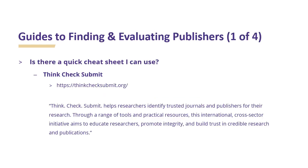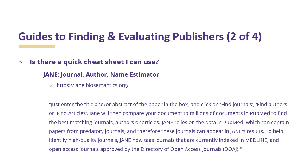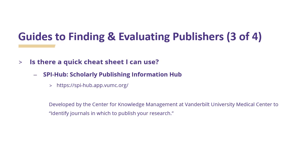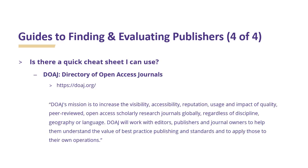We're going to talk about some guides to finding and evaluating publishers. There are resources that you can refer to, including Think Check Submit, which helps researchers identify trusted journals and publishers for their research. Another tool you can use is Jane, the Journal Author Name Estimator, which will compare your document to millions of documents in PubMed to find the best-matching journals, authors, or articles. You can also use SpyHub, the Scholarly Publishing Information Hub, developed by the Center for Knowledge Management at Vanderbilt University Medical Center to identify journals in which to publish your research. You can also use the Directory of Open Access Journals, which works with editors, publishers, and journal owners to help them understand the value of best-practice publishing and standards.